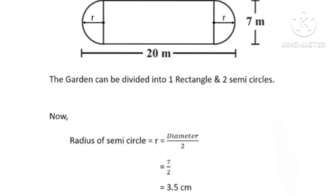The garden can be divided into one rectangle and two semi-circles. Radius of semi-circle r equals diameter over 2 equals 3.5 meters.